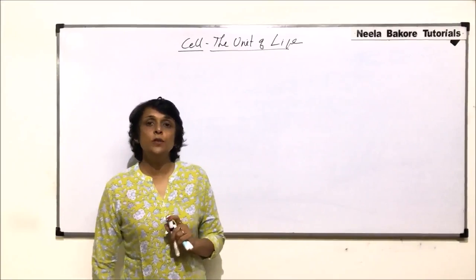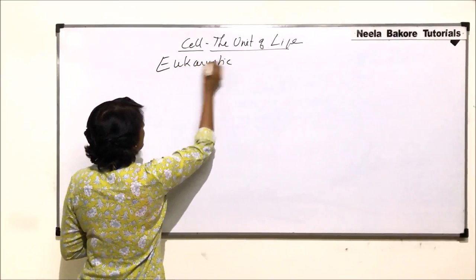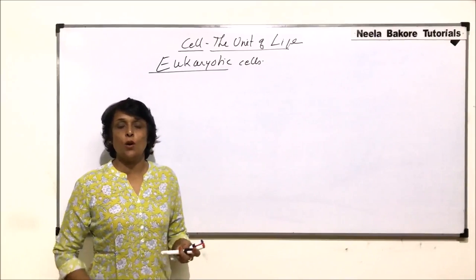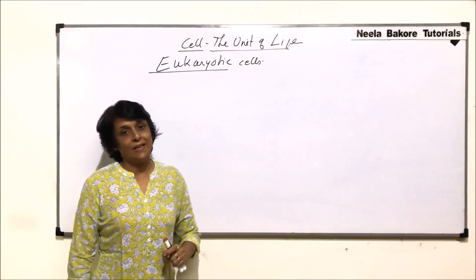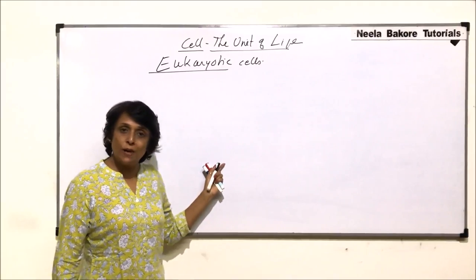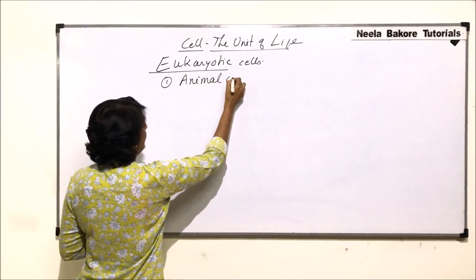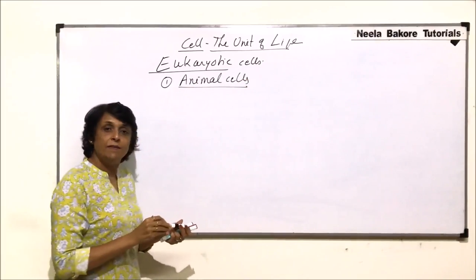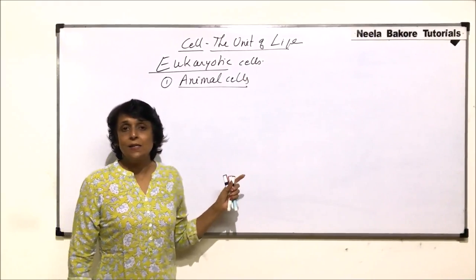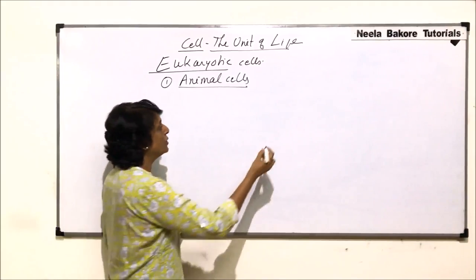We would now discuss one of the eukaryotic cells. In eukaryotic cells, we place four types of organisms: protists, fungi, plantae, and animalia. So animal cells, plant cells, fungal cells, and protist cells are all eukaryotic cells. We would take up two of these — first the animal cell, and then the plant cell, as these two are the most important eukaryotic cells. Animal cells exist in multiple shapes and sizes.